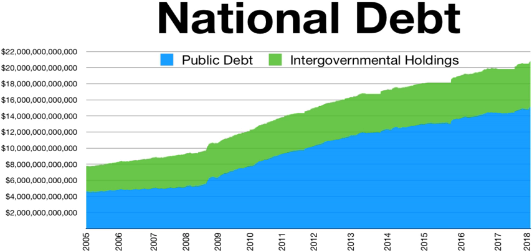Only debt held by the public is reported as a liability on the consolidated financial statements of the United States government. Debt held by government accounts is an asset to those accounts but a liability to the Treasury; they offset each other in the consolidated financial statements. Government receipts and expenditures are normally presented on a cash rather than an accrual basis, although the accrual basis may provide more information on the longer-term implications of the government's annual operations. The United States public debt is often expressed as a ratio of public debt to gross domestic product (GDP). The ratio of debt to GDP may decrease as a result of a government surplus as well as due to growth of GDP and inflation.